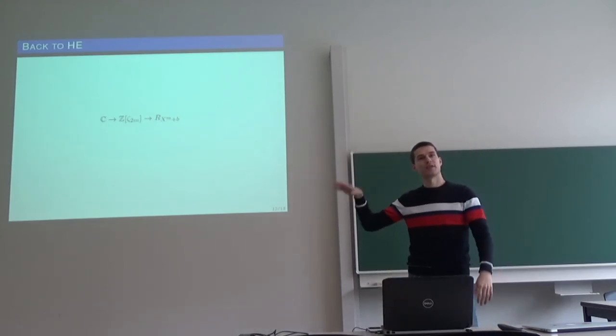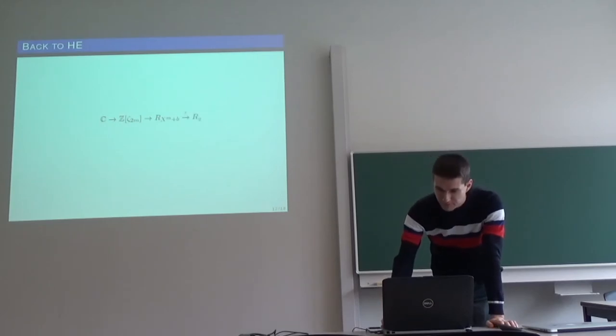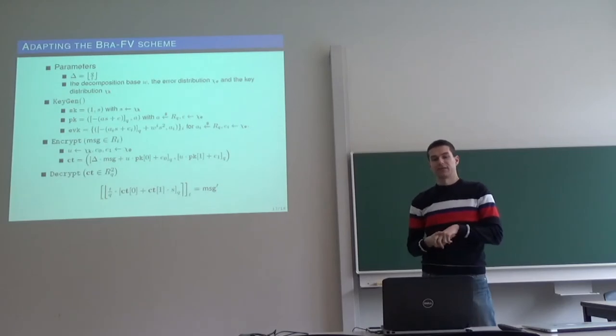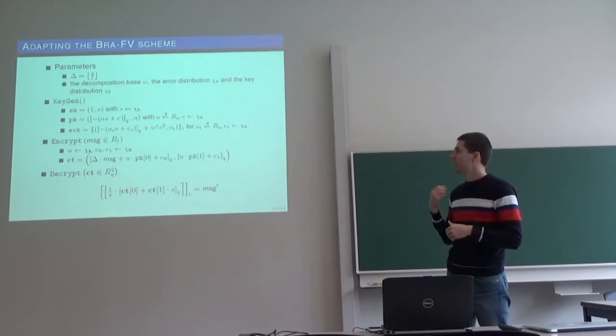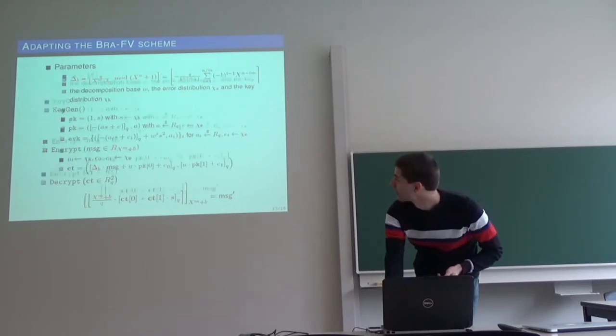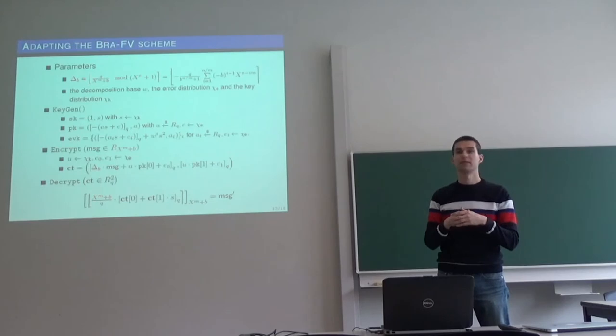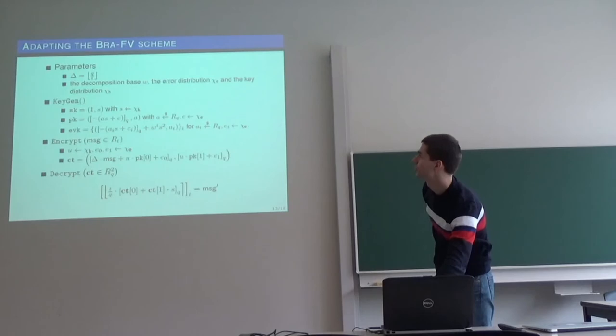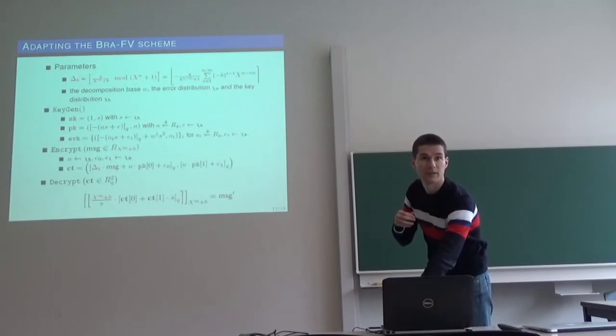So now we have this chain of encoding, so we start with complex numbers, go to cyclotomic integers, then go to the plaintext space, and now we need to encrypt those plaintexts. How to do that? Actually, if we have the BFV scheme, so this is the description of the van der Ketelaar scheme, the only thing that we need to do is just to replace t by x to the n plus b. So as before, maybe in the first line it's a bit tricky, but actually mathematically it's exactly the same, so we just take the inverse of, so in the original BFV it was q multiplied by t inverse, modulo x to the n plus 1, but here we have q multiplied by x to the n plus b inverse, again modulo x to the n plus 1. But the rest we just substitute t by x to the n plus b.